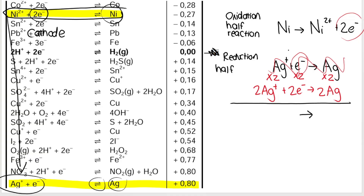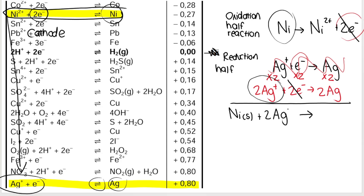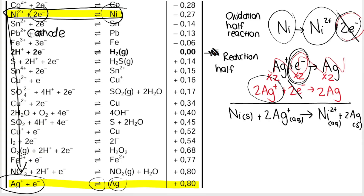We can now ignore the original unbalanced version and use the new balanced one to write the net reaction. I write my arrow, cancel out my electrons, then rewrite what is left. On the left-hand side: solid nickel and 2Ag⁺. On the right-hand side: Ni²⁺ (aqueous) plus 2Ag (solid). I didn't need to multiply the first reaction because it already had two electrons. I multiplied the second one by two to match. And there is the net overall cell reaction.